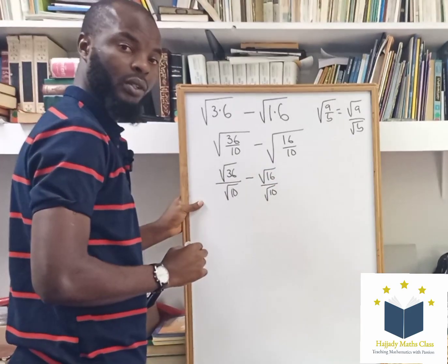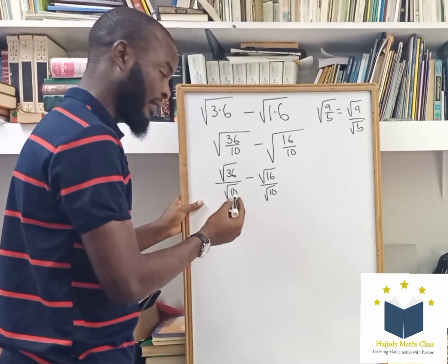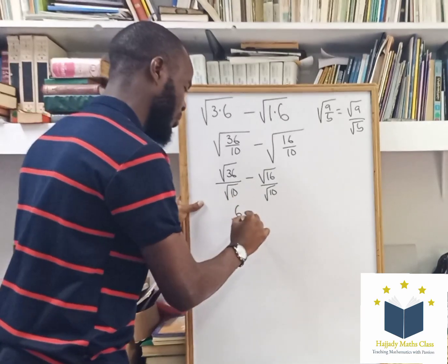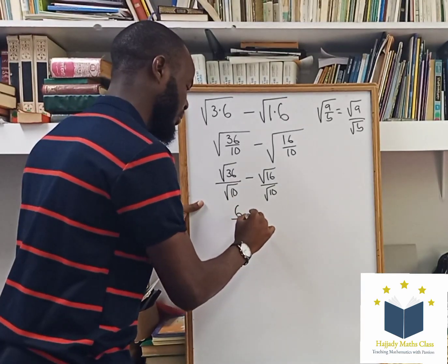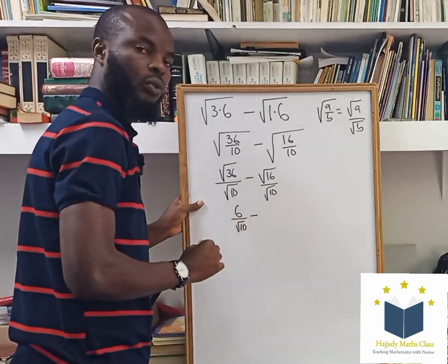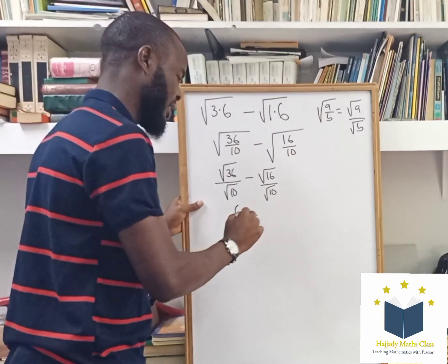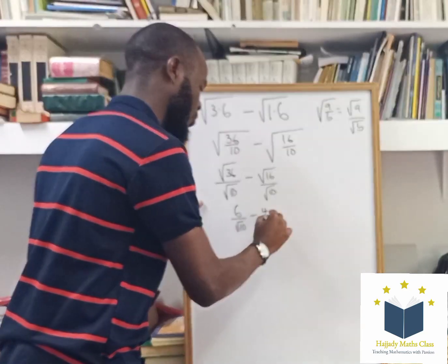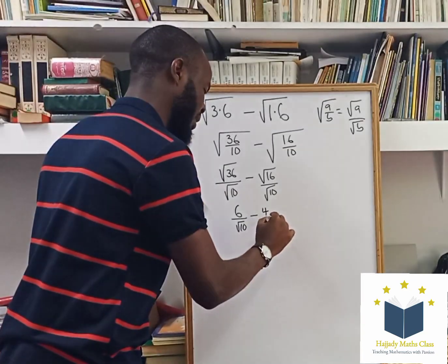Square root of 36 is the same thing as 6 over root 10. Square root of 16 is the same thing as 4 over root 10.